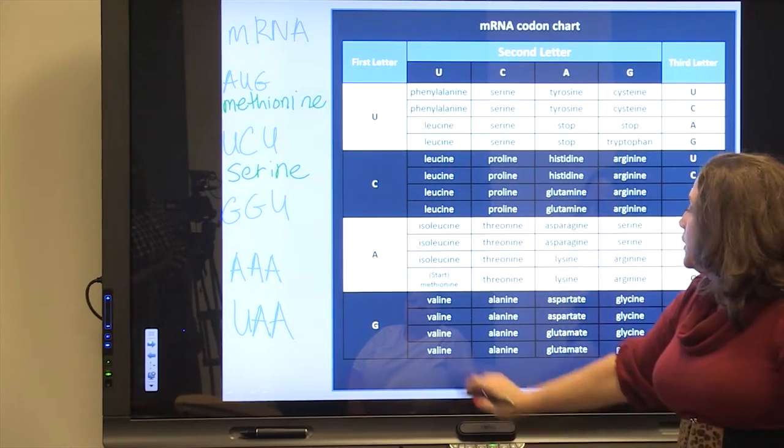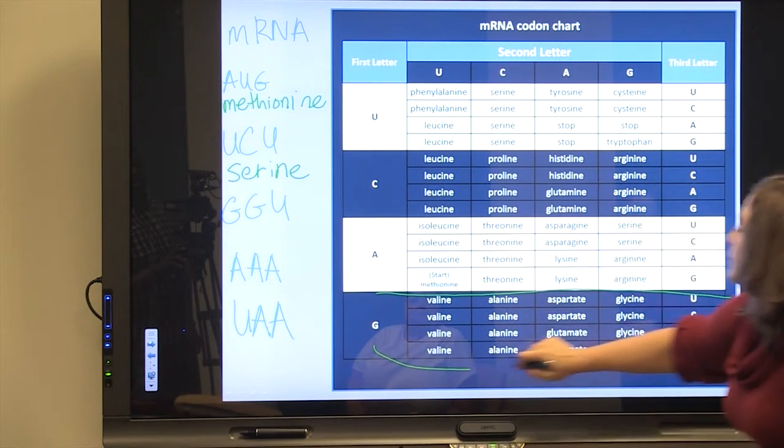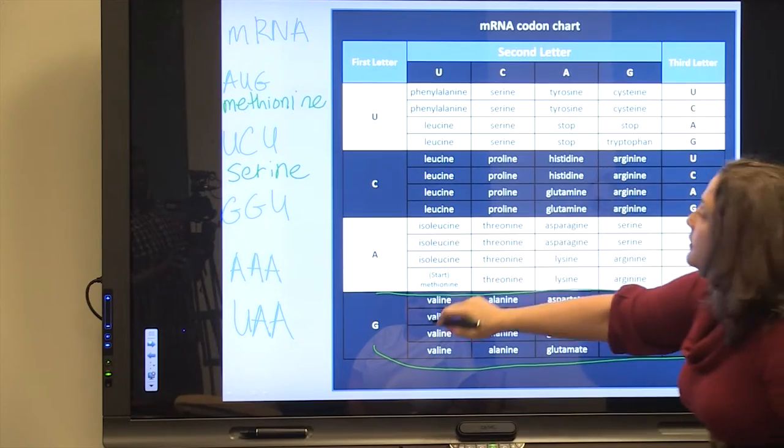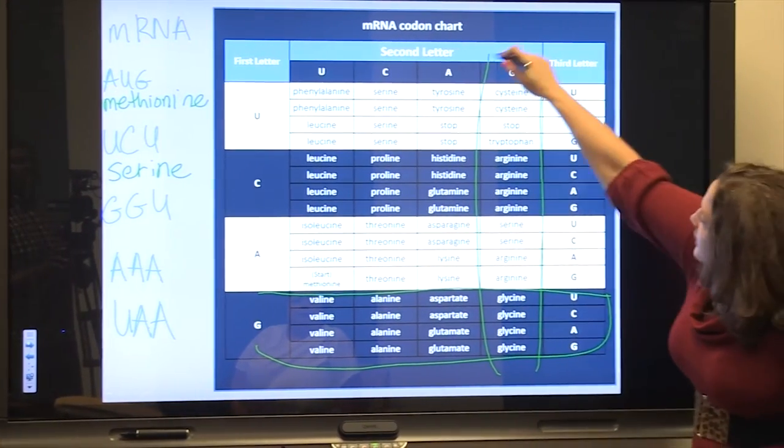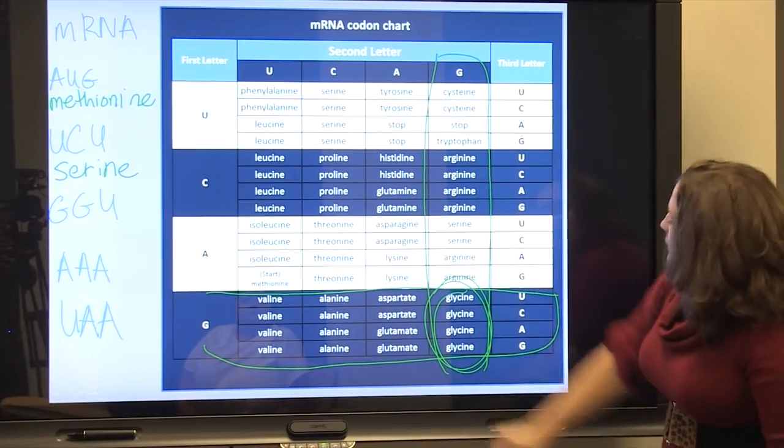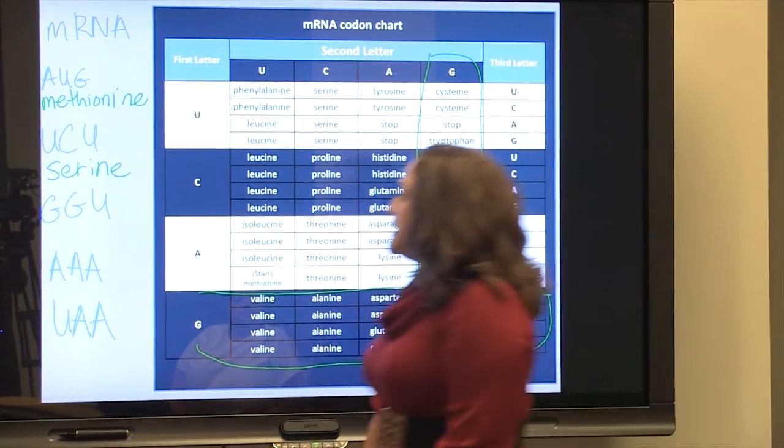And, G is the first letter of the third amino acid code. G is also the second letter. Another redundant code, GGU, glycine.